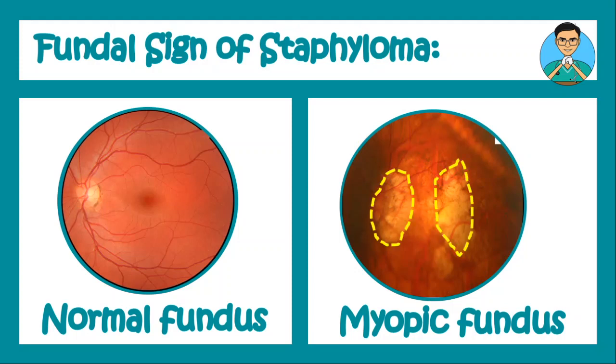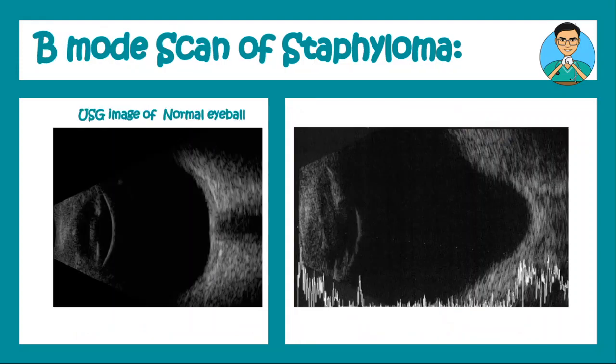Apart from that you can also have staphylomas. Staphylomas are nothing but bulging out of the eyeball from the weak spaces of the eyeball. A detailed video on staphyloma will be made separately, but for now just remember that a posterior staphyloma can give rise to myopic fundus findings, and this is the fundal sign of staphyloma.